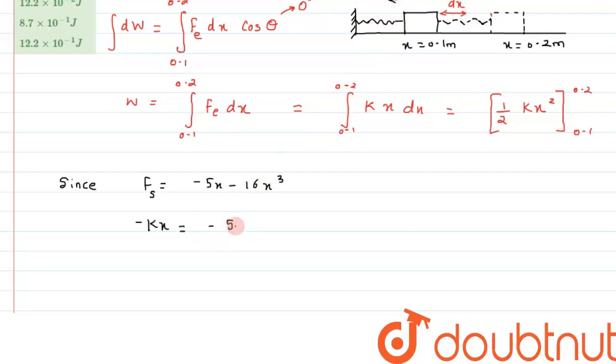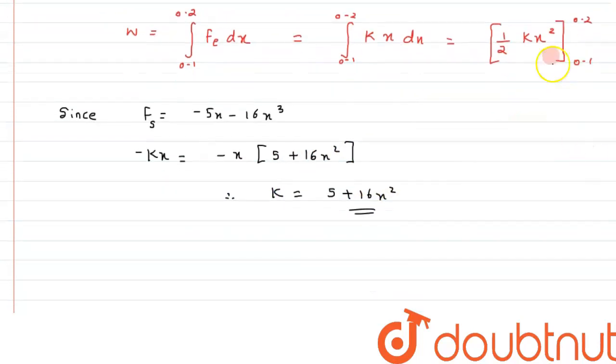The spring force is nothing but minus kx as we can see it over here. It can be written as minus, if we can take it out as common or we can say, we can take x and minus both common. So we are left with 5 plus 16x squared. If we compare this, therefore we can say the value of k will be nothing but 5 plus 16x squared. So this is the value of k we are getting. Let's suppose that this was our equation number 1.